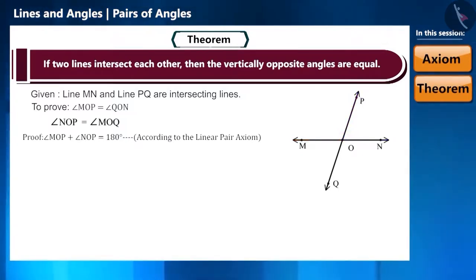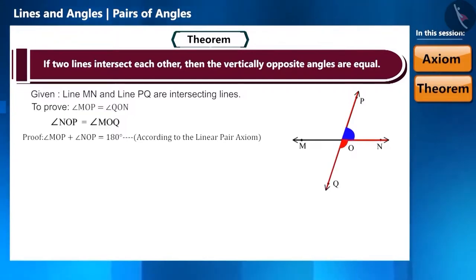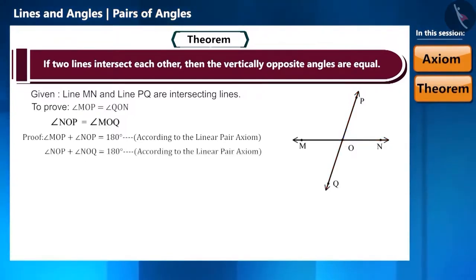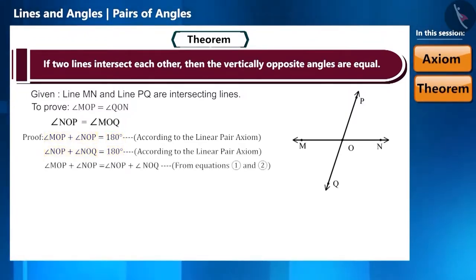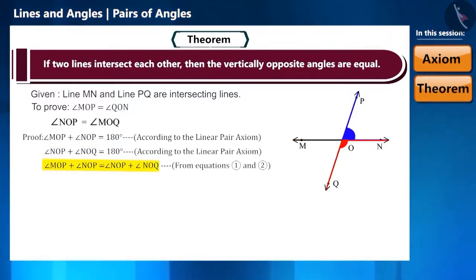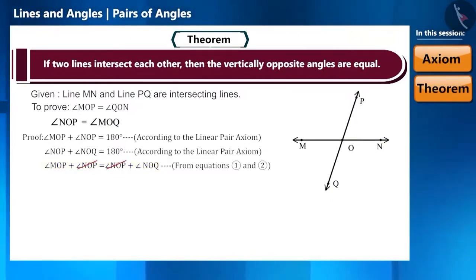Yes, according to the linear pair axiom. Similarly, taking ON as the ray, can we say that angle NOP plus angle NOQ is equal to 180 degrees? Yes, according to the linear pair axiom. If we pay attention to both equations, the right-hand side is equal, so the left-hand side will also be equal. That is, angle MOP plus angle NOP equals angle NOP plus angle NOQ. And since angle NOP is the same on both sides, by cancelling it from both sides, we get angle MOP equal to angle NOQ.